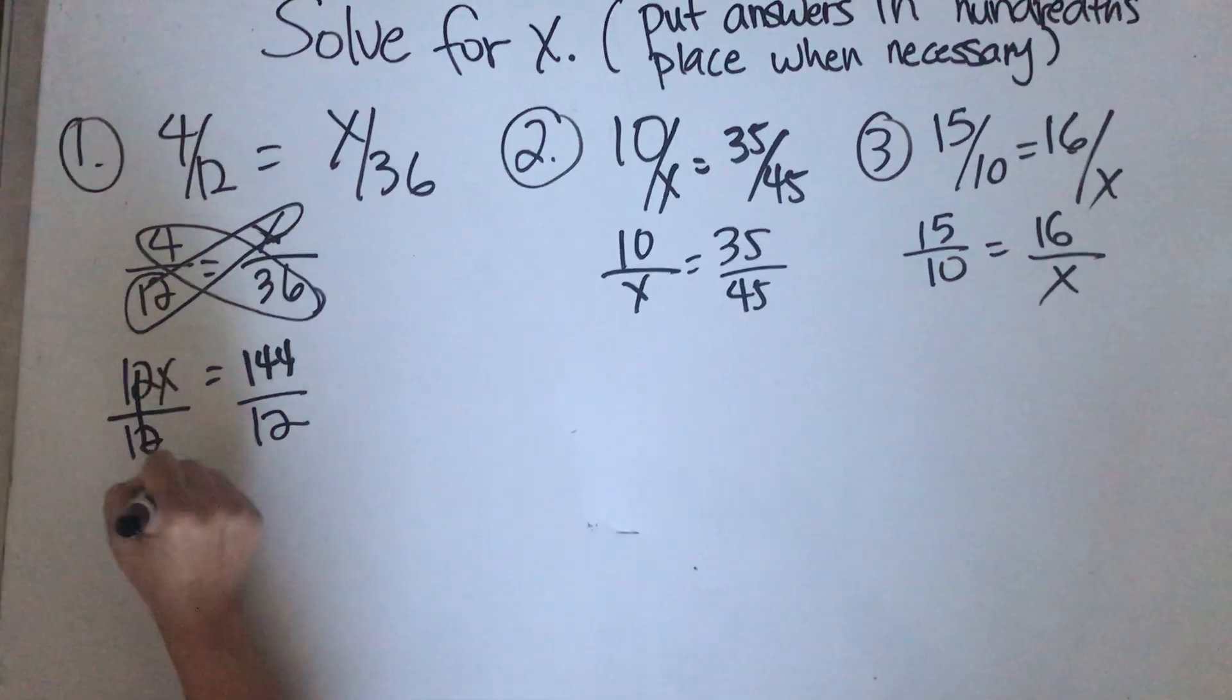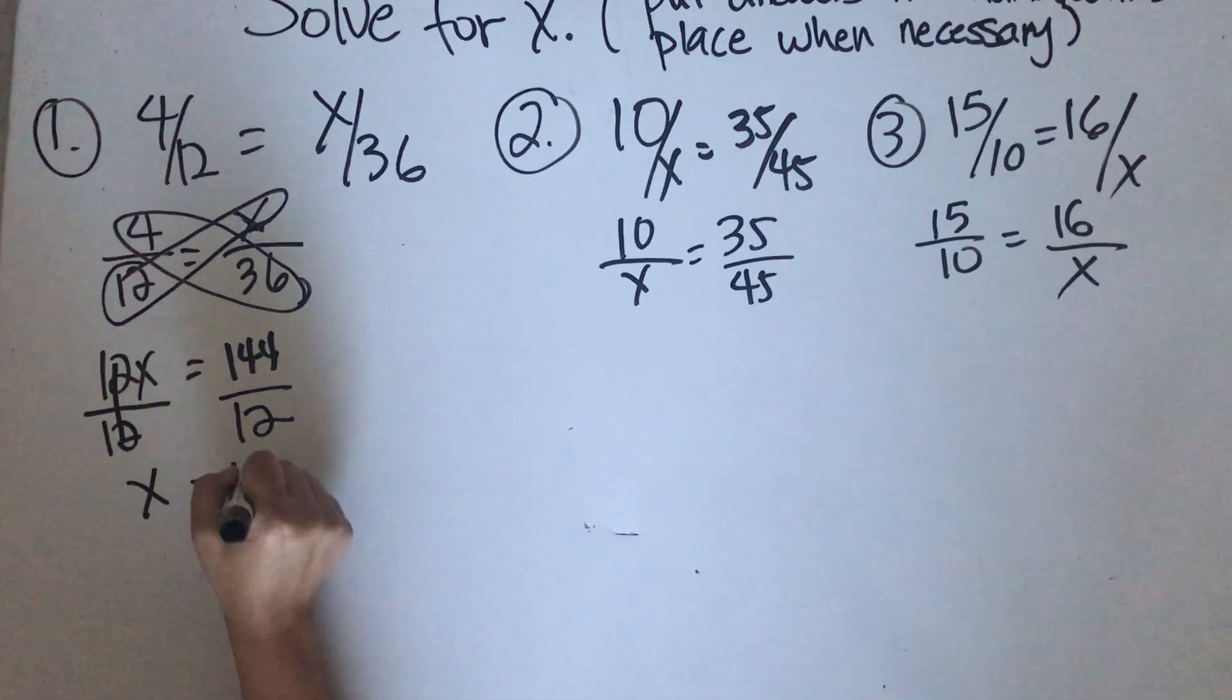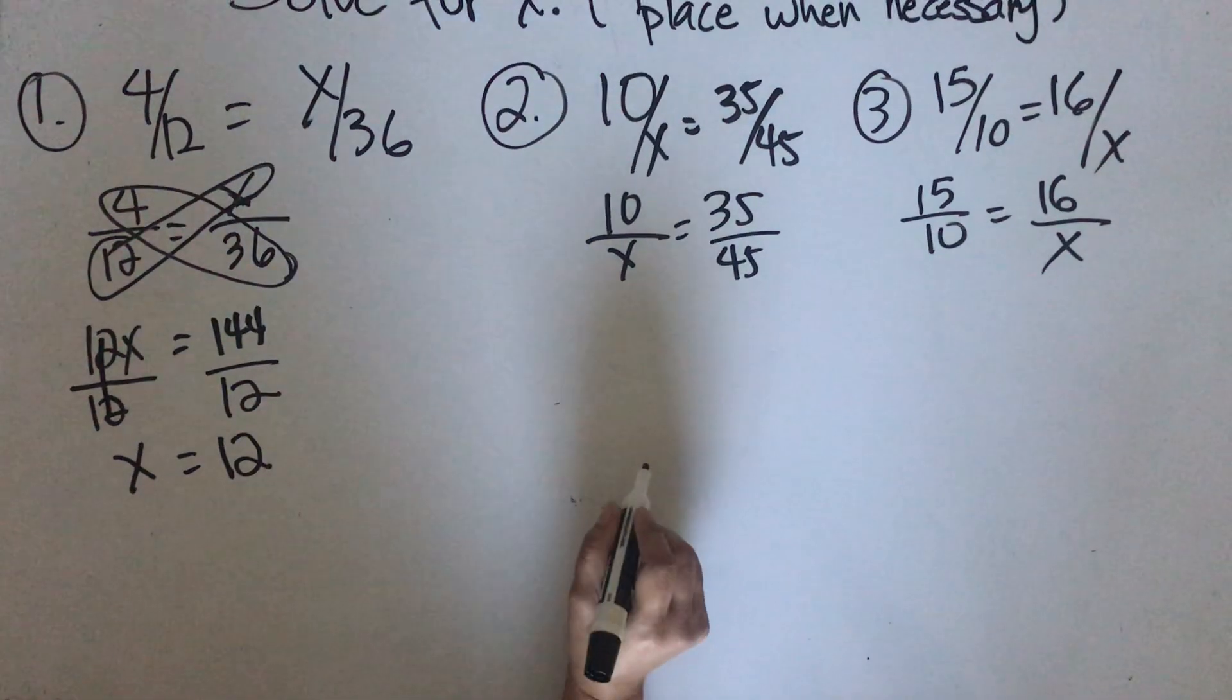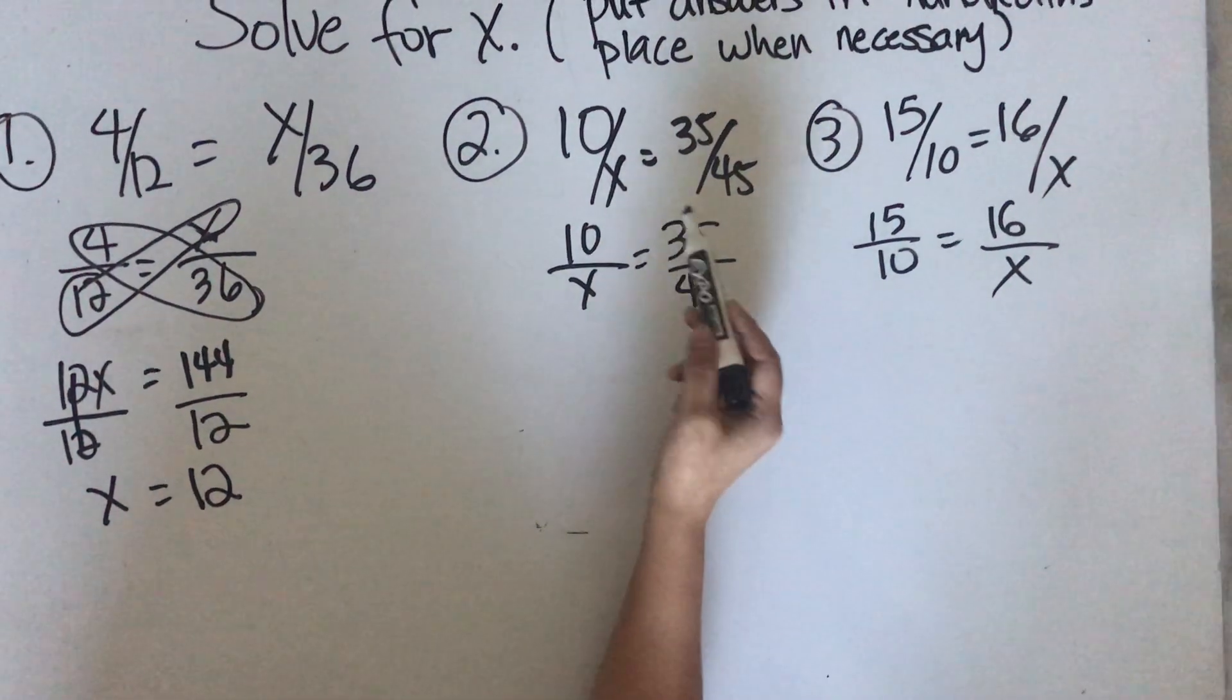So you cross that out, you're left with x, and then your answer here is 12. Same concept here.